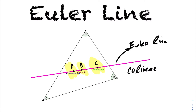There's also a connection between their distances. It turns out that the distance from your orthocenter to your centroid is twice the distance from your centroid to your circumcenter. So you have an exactly two-to-one ratio going on here. The centroid and circumcenter are always closer together, whereas the centroid and orthocenter are always farther apart, and the centroid always lies in the middle.